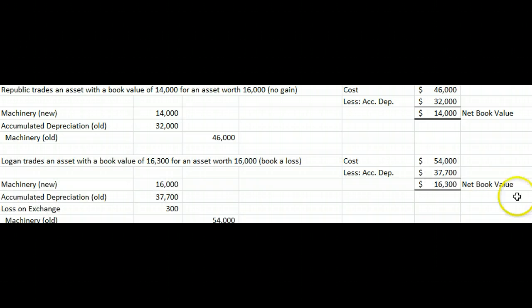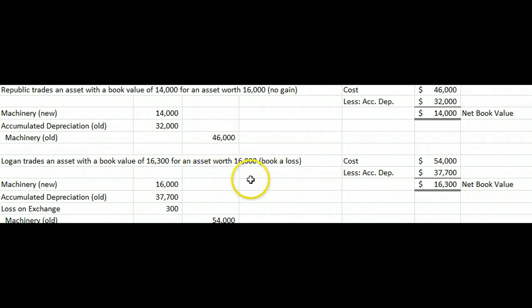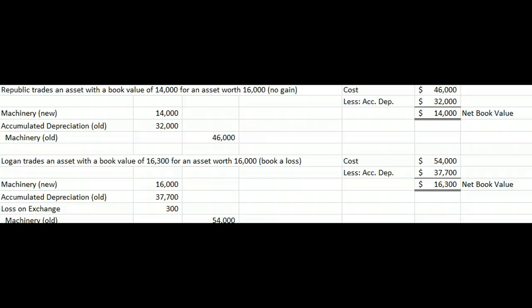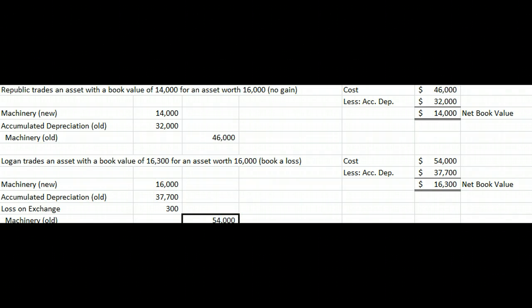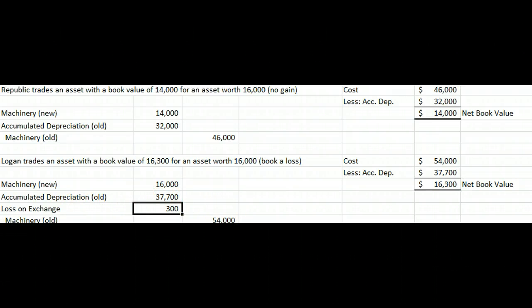From Logan's point of view, it gives up an asset on its books for $16,300 to get an asset worth only $16,000, so it has a loss of $300. Even though this transaction has no commercial substance, we still make them book that loss. We put the new equipment on the books at what it's worth, take off the old accumulated depreciation and machinery at cost, and balance the journal entry with a loss on exchange. Remember: gains are credits, losses are debits.